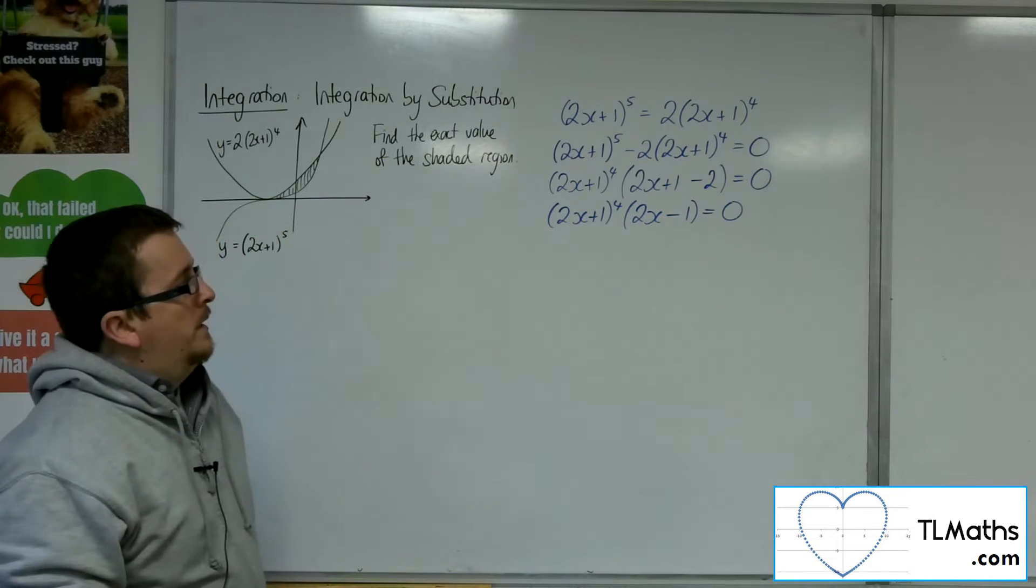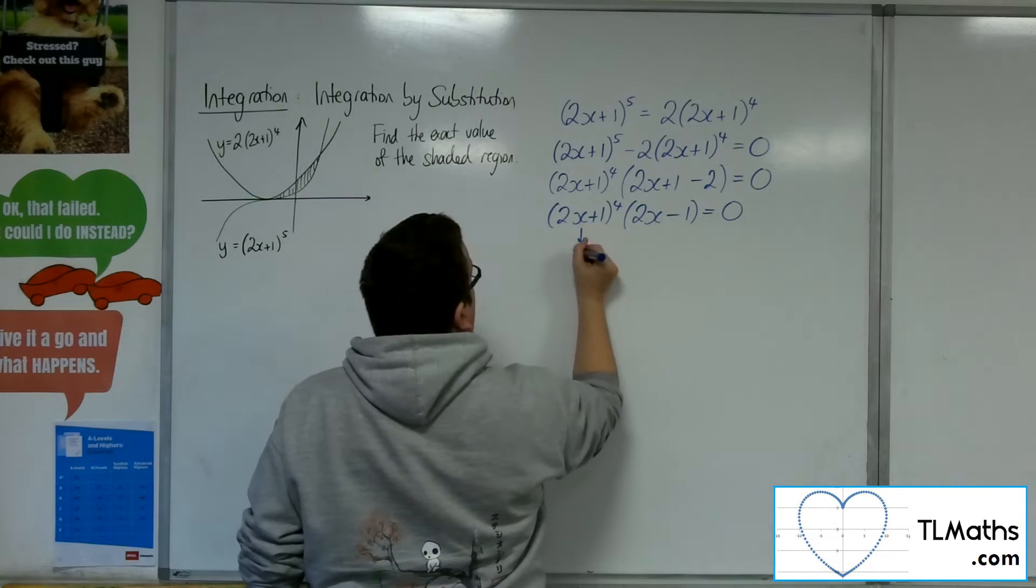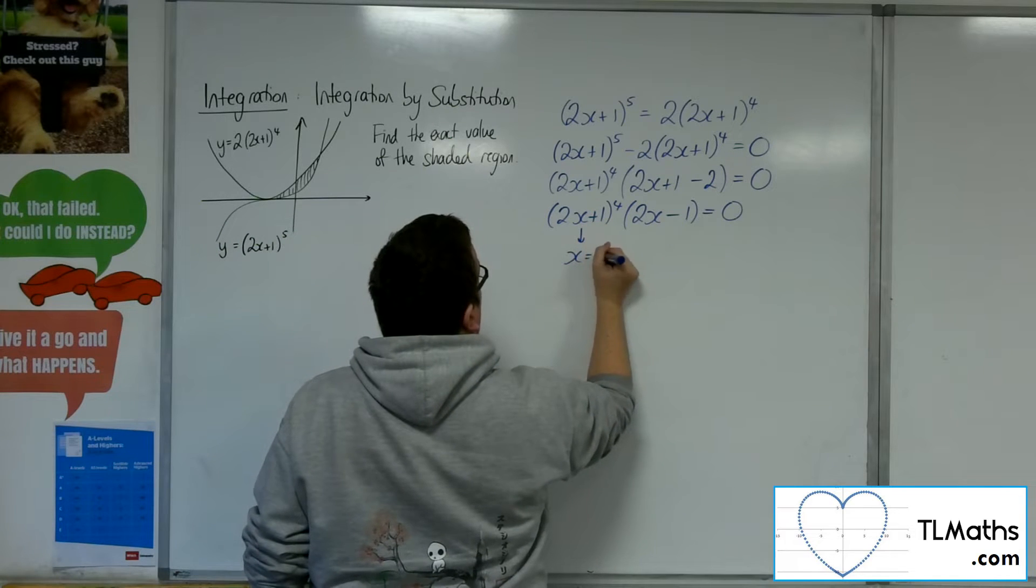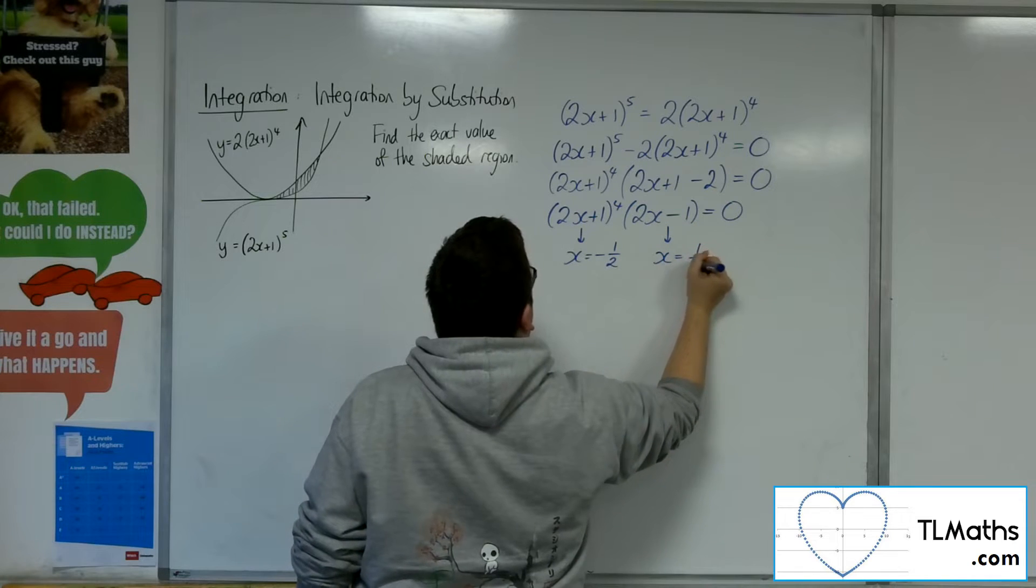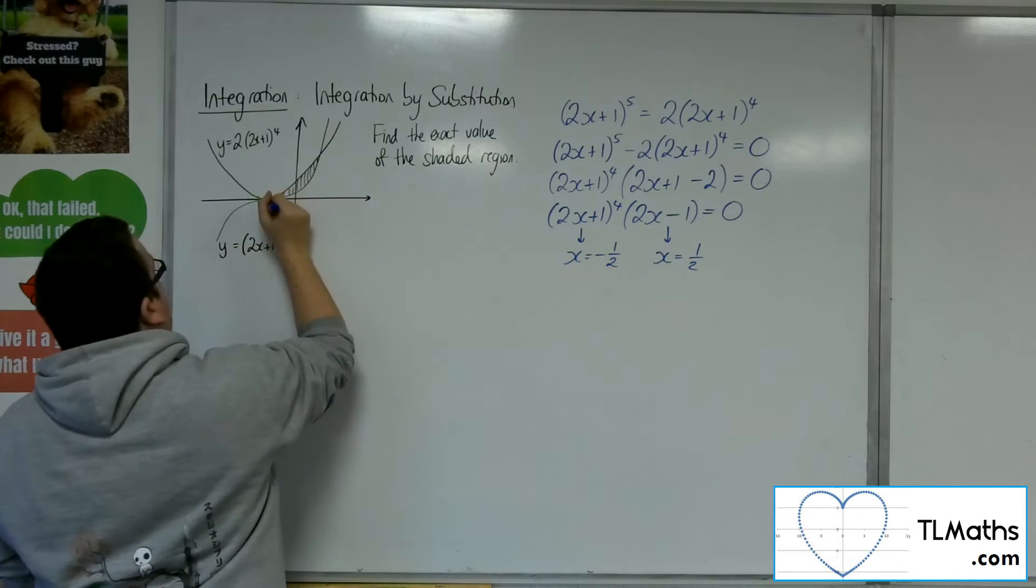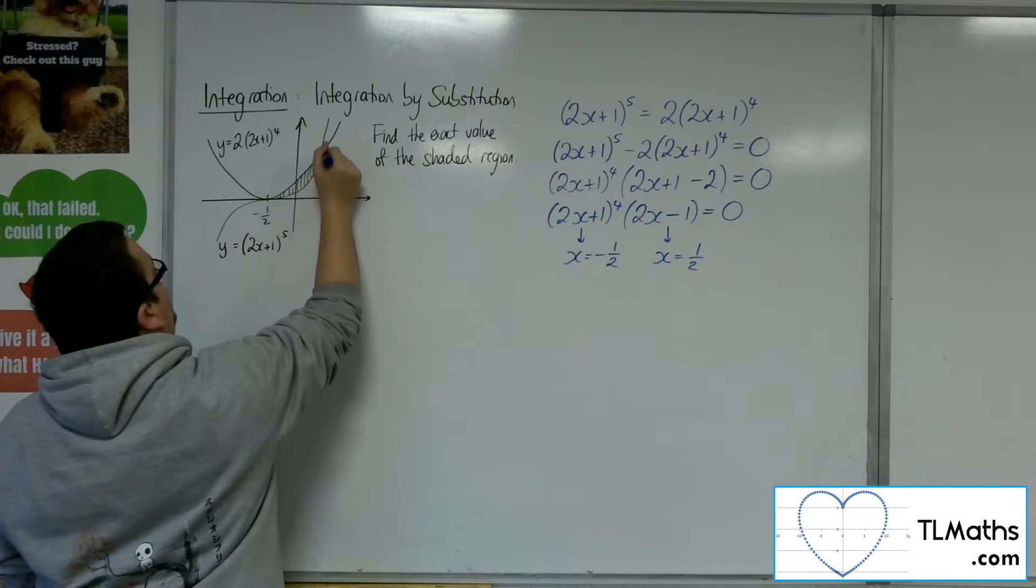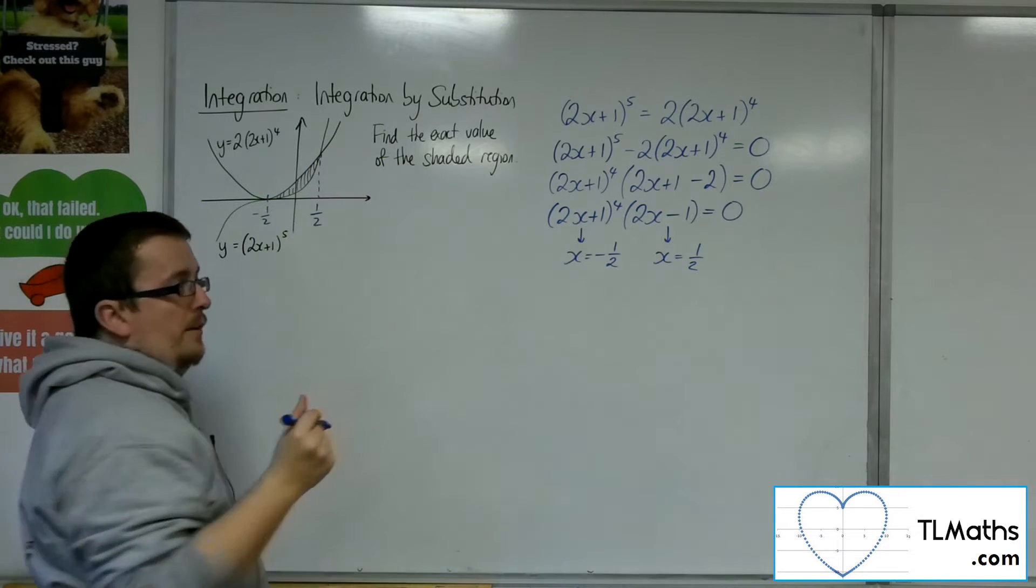So we are going to have 2 solutions, one where x is equal to minus 1 half, and one where x is equal to 1 half. So this point here must be at the minus 1 half, and this point here must be at the positive 1 half.